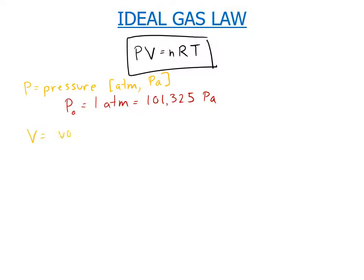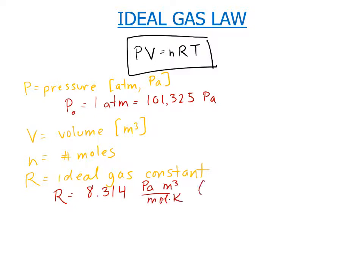V is the volume, which is in cubic meters. N is the number of moles. R is the ideal gas constant, and R is equal to, in SI units, 8.314 joules per mole Kelvin. But also, that's equivalent to pascals cubic meter per mole Kelvin, which is the same as joules per mole Kelvin.